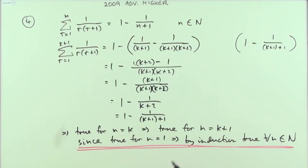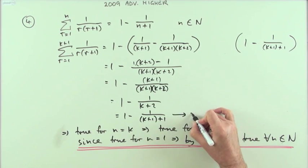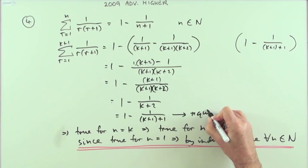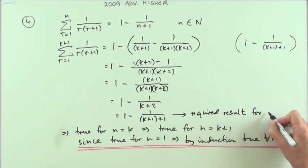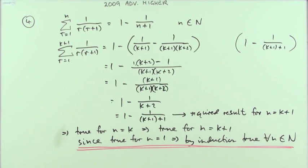One other thing I might do is at that point put down: that's the required result for n equals k plus one. And there, that would be it.